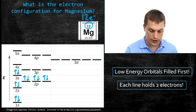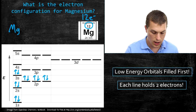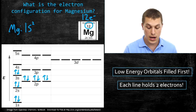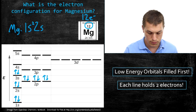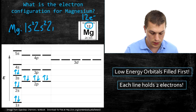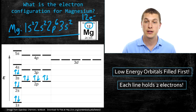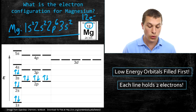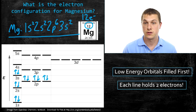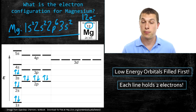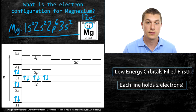Now if I want to write the electron configuration for magnesium, I do it the exact same way. My first orbital is the 1s, with two electrons. Then the 2s orbital, with two electrons. Then the 2p orbital, with six electrons. And finally the 3s orbital, with two electrons. So the electron configuration for magnesium is 1s², 2s², 2p⁶, 3s². All I'm doing is telling you the number of electrons in each orbital, and these critically affect the properties the elements are going to have.